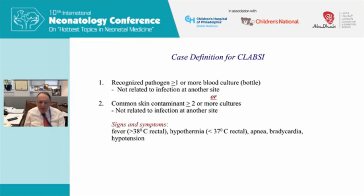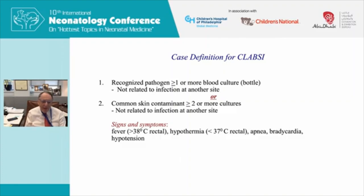To prevent these infections we need a case definition for CLABSI, from the WHO and CDC. You need a recognized pathogen in at least one or more blood culture bottles, not related to infection at another site — so if someone has an abscess and develops bacteremia, that's not CLABSI. Or you can have a common skin contaminant like coagulase-negative Staphylococcus, but then you need at least two positive blood cultures, again not related to another site.